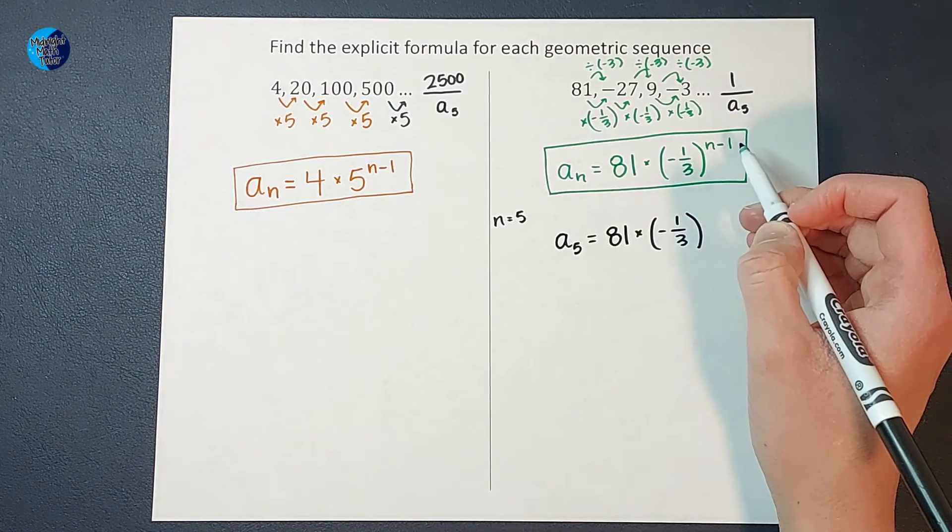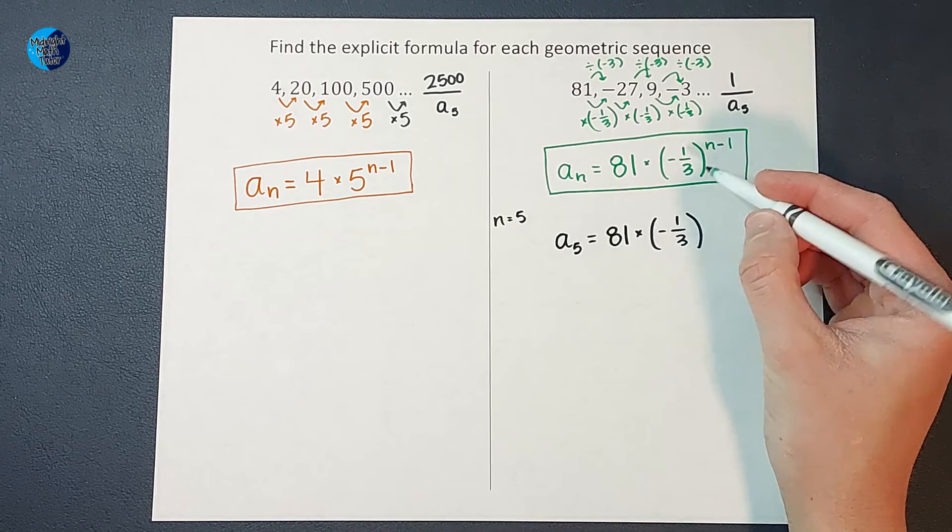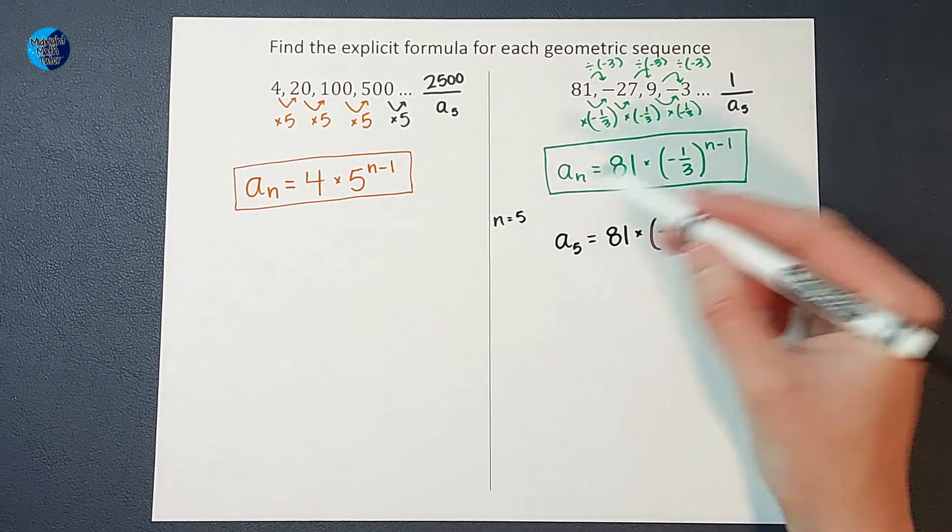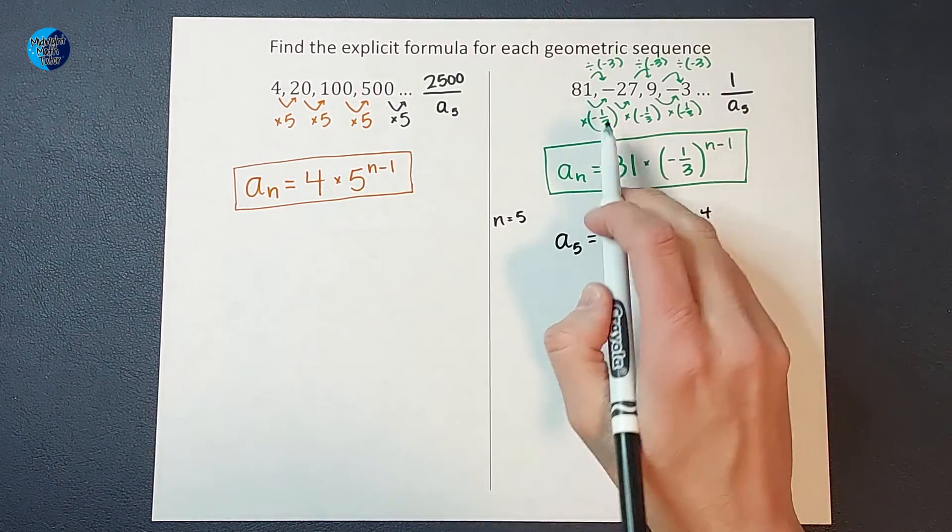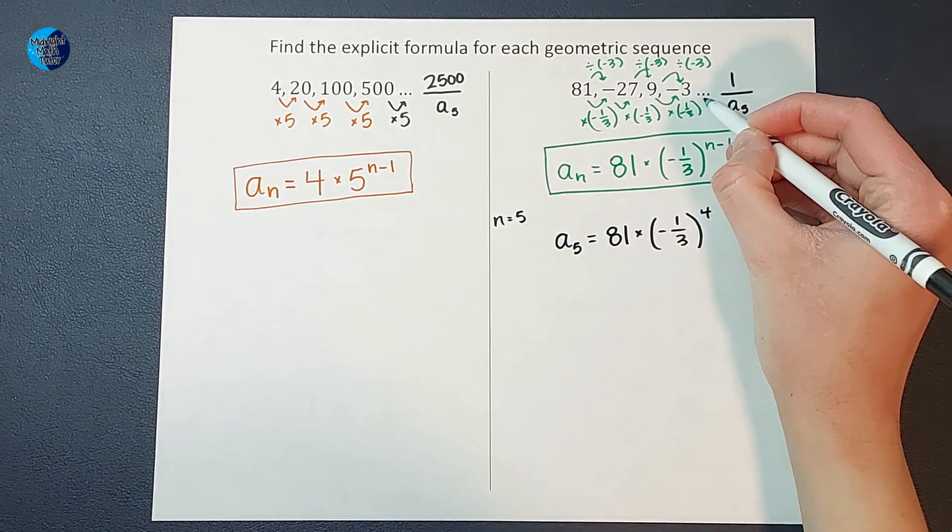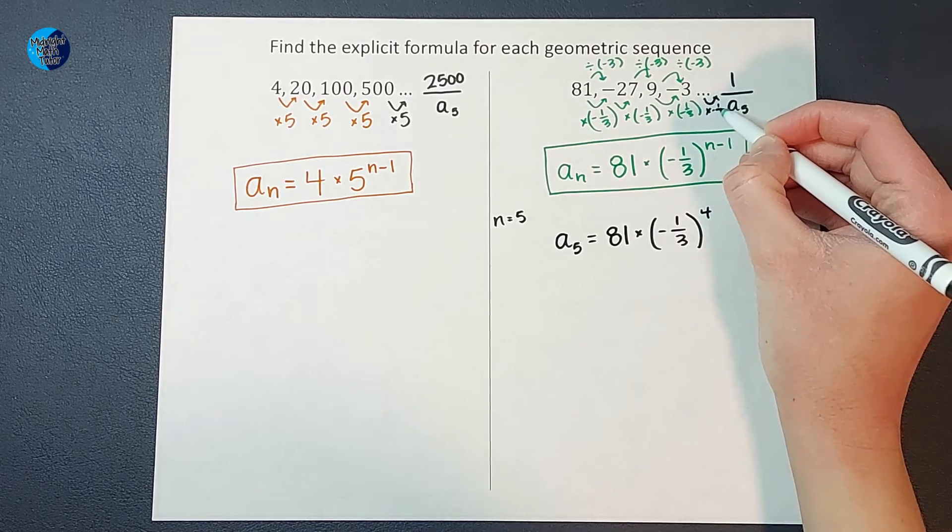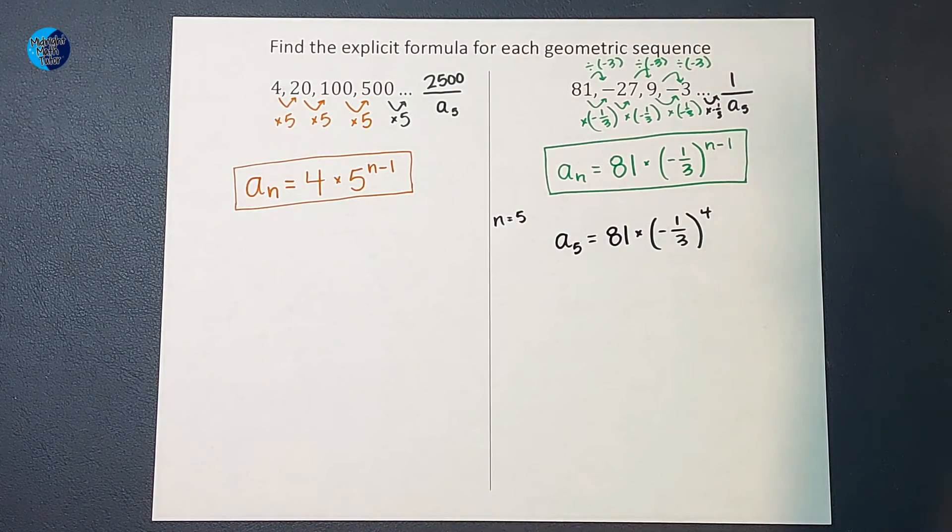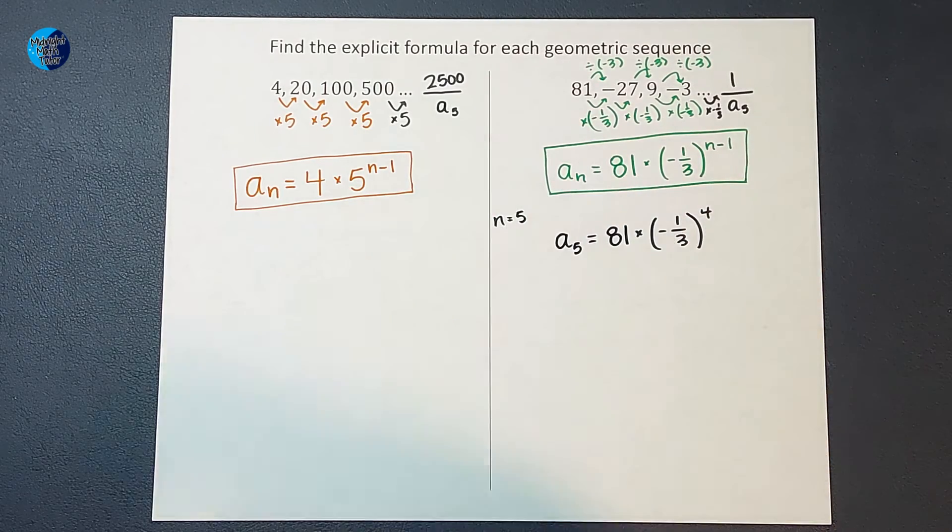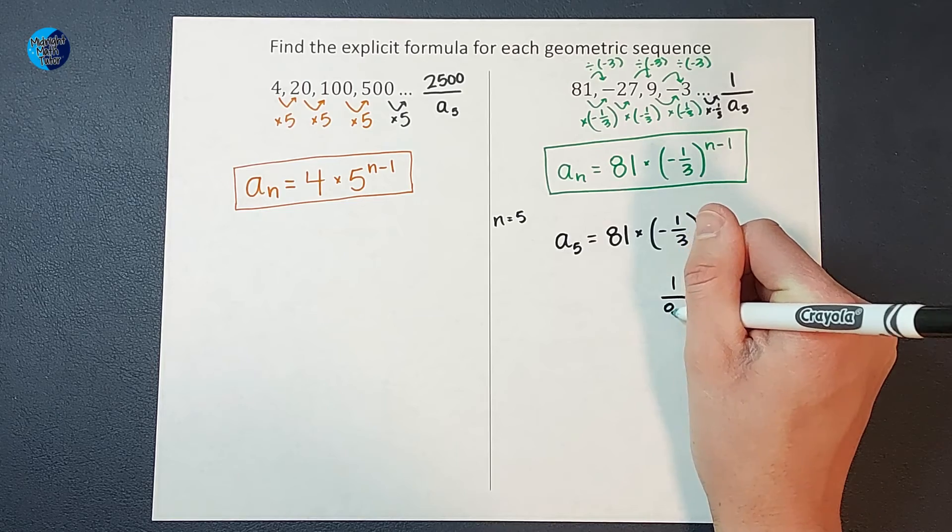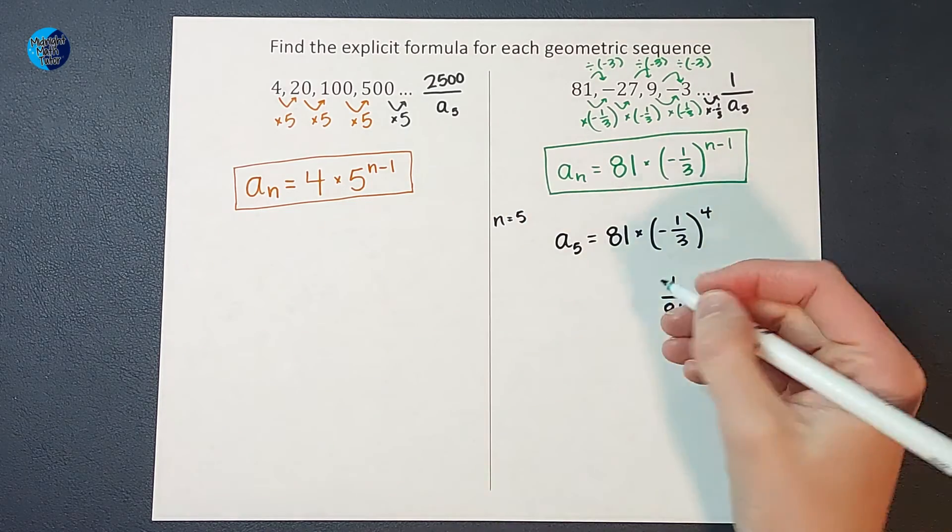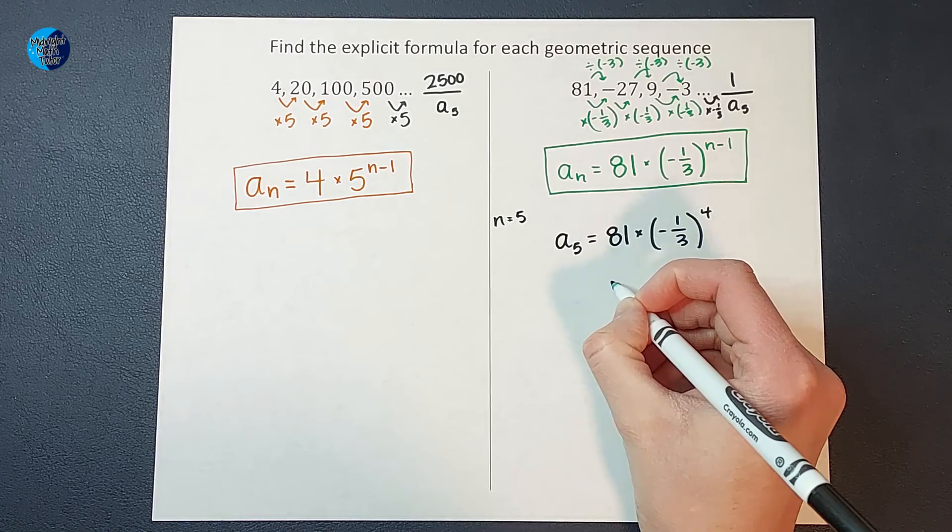So let's go ahead and plug it into our explicit formula and make sure when we plug in 5 for n that we end up with 1. So if I have a sub 5, I'm looking for the fifth number in the sequence where n equals 5. I believe that is equal to 81 times negative 1 3rd to the n minus 1 power. So n minus 1, in this case, we're plugging in 5 for 1. So 5 minus 1 would be 4. Because didn't we multiply it by 4 times? 1, 2, 3. I didn't write it the fourth time, but we did. We multiply by it 4 times. So if I do negative 1 3rd to the fourth power, guess what I get? I get a positive 1 over 81.